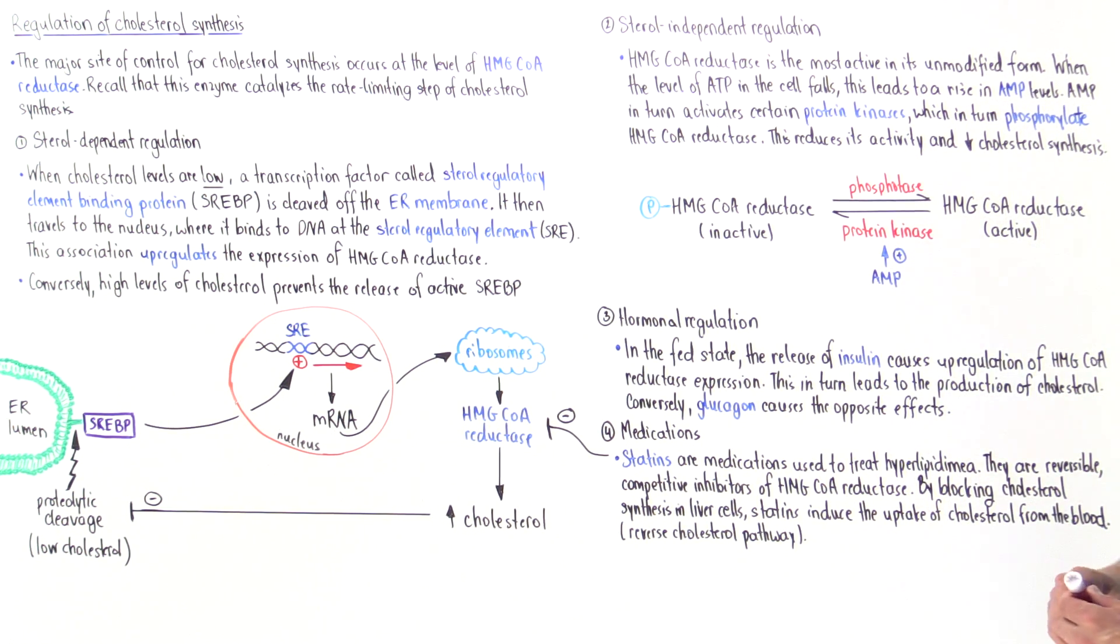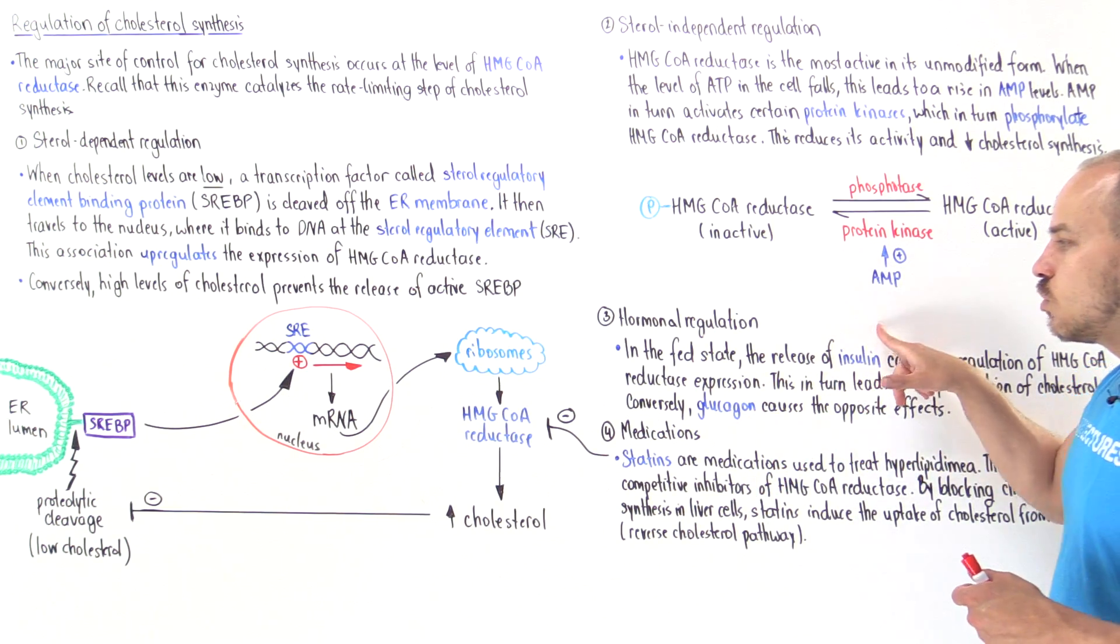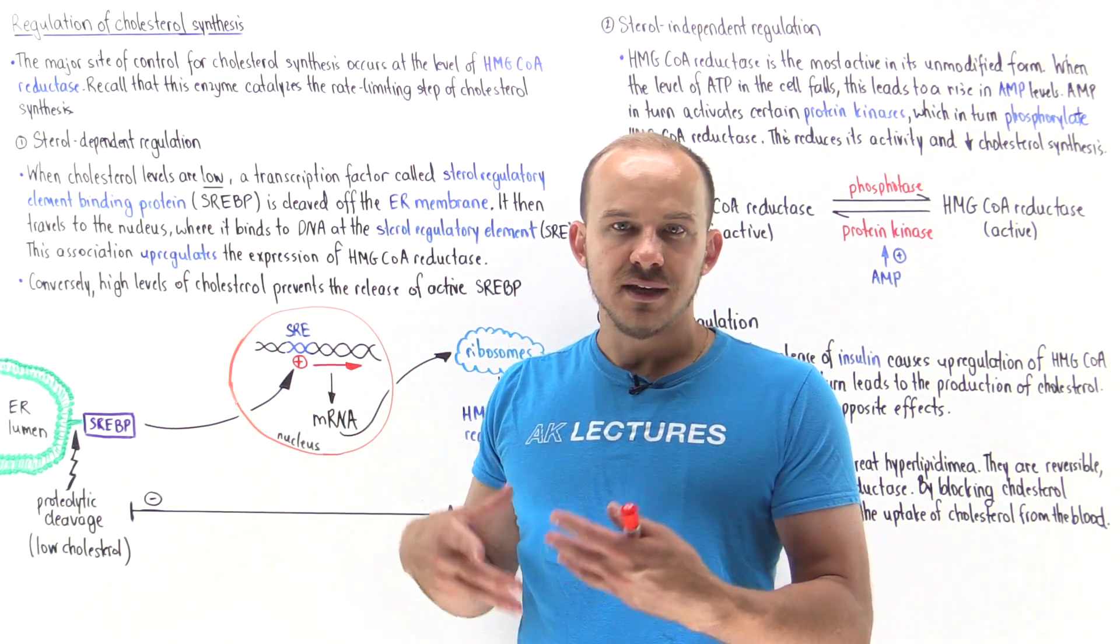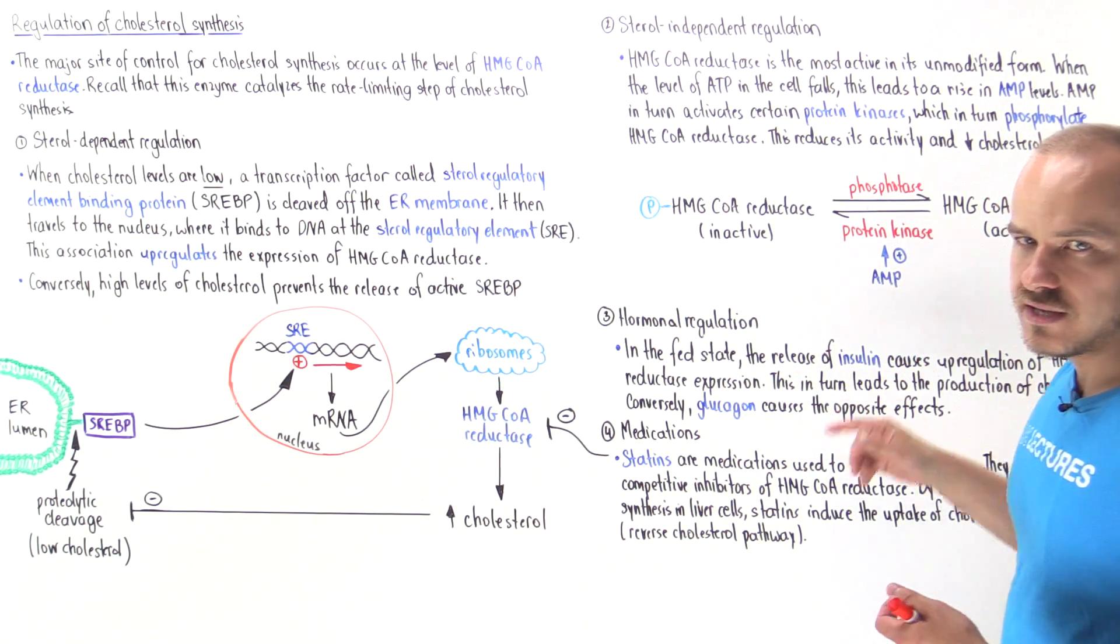We can also have regulation at the level of hormones. Specifically the two hormones are insulin and glucagon. In the fed state, after we eat a meal rich in proteins and fats for example, insulin is going to be released.